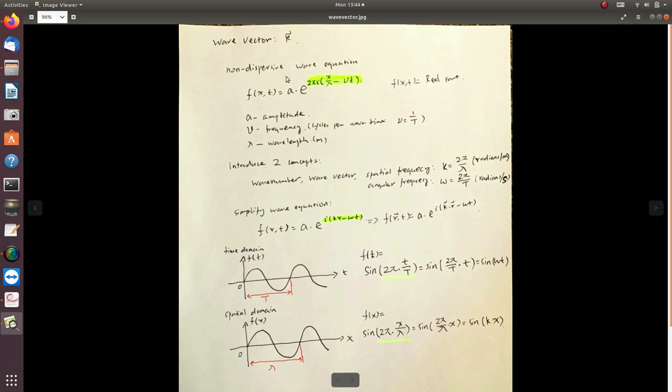like the electric field or the magnetic field, you have a unit. And then this is complex form, and V is a frequency. It is the number of cycles per unit time. Basically, it is the inverse of the period.